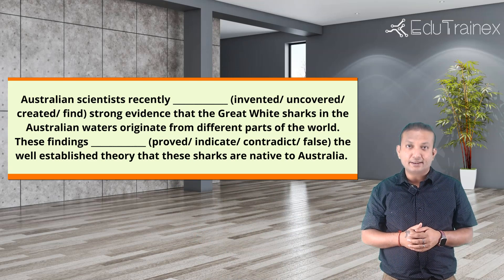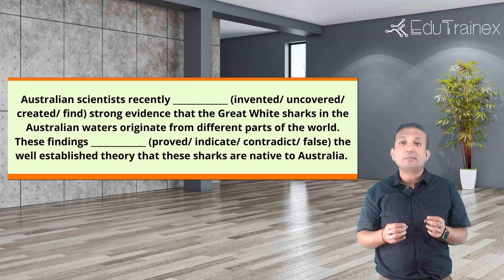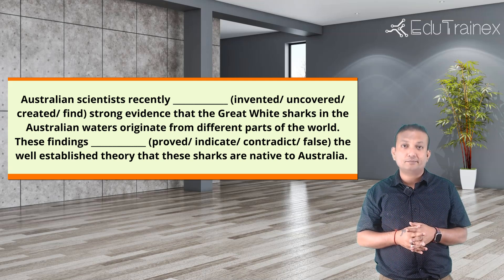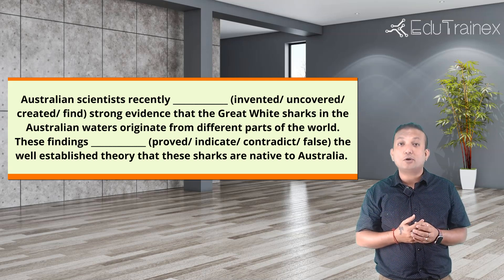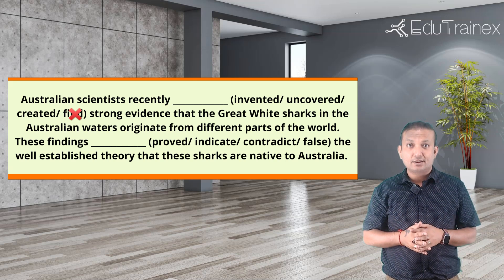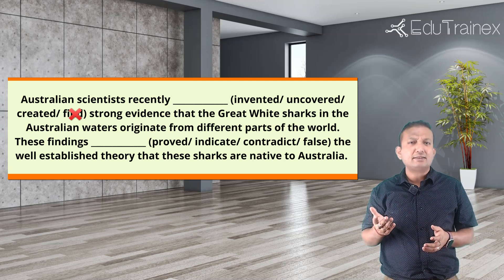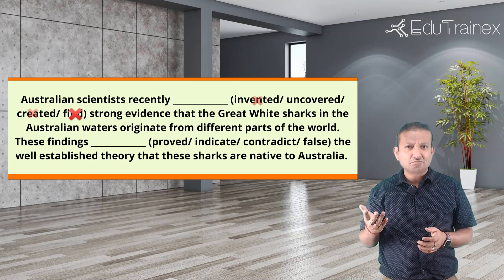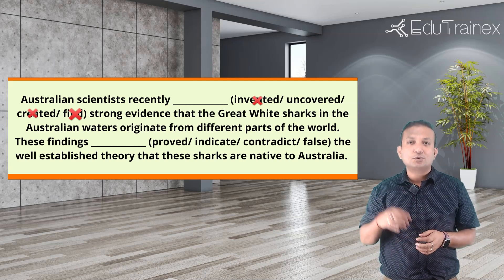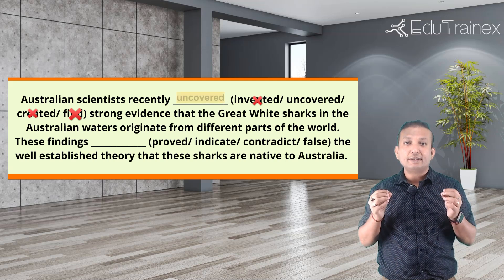Let's examine the first sentence: 'Australian scientists recently [blank] strong evidence that the great white sharks in Australian waters originate from different parts of the world.' Use grammar first to eliminate options — 'recently' is past tense, so we can cross out 'find,' which is present tense. Now use context and meaning: invented evidence? Created evidence? No — you don't create or invent evidence, you find it. So the only word similar to 'find' that fits both grammatically and meaningfully is 'uncovered.'